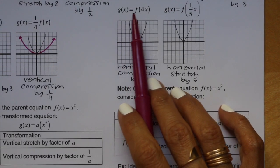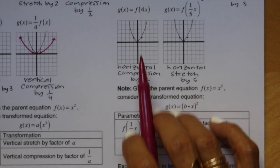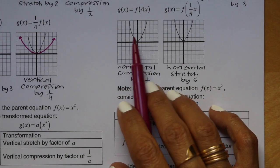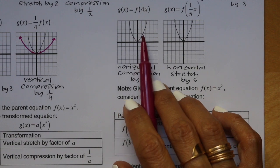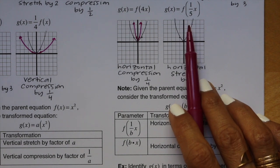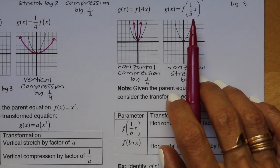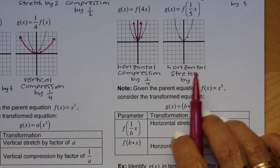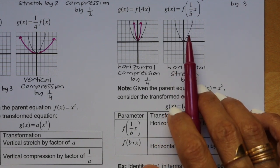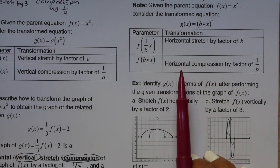This equation says g of x equals f of (4x). Working backwards from 4, we use 1 fourth — a horizontal compression by 1 fourth. The points that were out 1 from the y-axis now go out only 1 fourth. The next equation says g of x equals f of (1 fifth x). The 1 fifth is inside the parentheses, so working backwards we use the number 5 — a horizontal stretch by 5. Instead of the points being out 1, count out 5 from the y-axis.